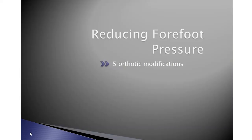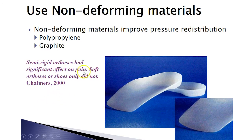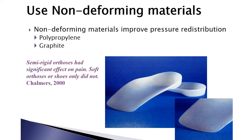To reduce forefoot pressure, there are five suggested orthotic modifications, and most of these have evidence to back up what we're trying to accomplish. So not only can we use tissue stress theory to figure out what we're trying to accomplish, but we can fine-tune that prescription using available evidence. We know we want to use a non-deforming material — something fairly rigid — because softer materials don't transfer pressure as well. This was shown by Chalmers in 2000, who studied patients with RA and found that semi-rigid orthoses had a significant effect on pain where softer orthoses or shoes alone did not. The specific material — polypropylene, graphite, or others — can be left to the practitioner, but the key is that it be resistant to deformation.